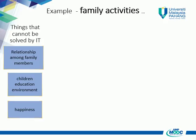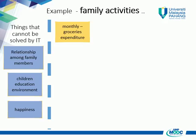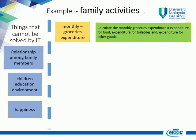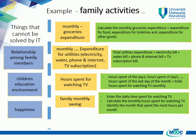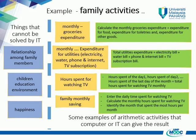Now let's discuss some activities that can be solved by IT or computer solution through arithmetic formulas. First, calculating the monthly expenditure for groceries — the total expenditure is obtained by adding expenditure for food monthly with expenditure for toiletries and other goods. Computer can calculate the result based on this formula. Similarly for calculating utilities expenditure, calculating hours spent watching TV, and calculating the monthly saving in a bank. It is hoped that students can get some initial idea about which daily life activities IT or computers can solve, and which they cannot.